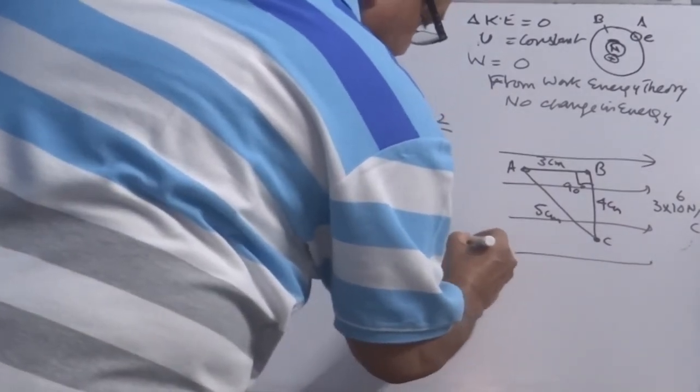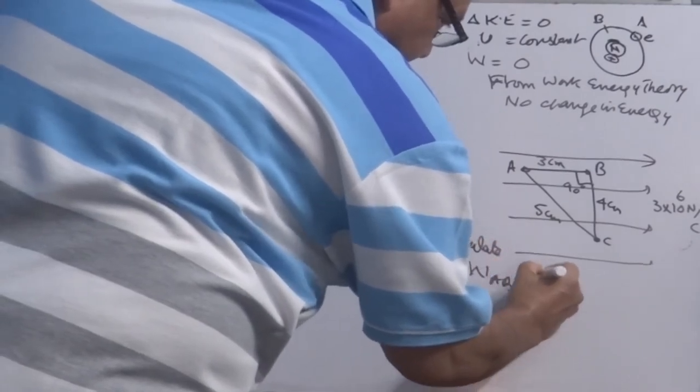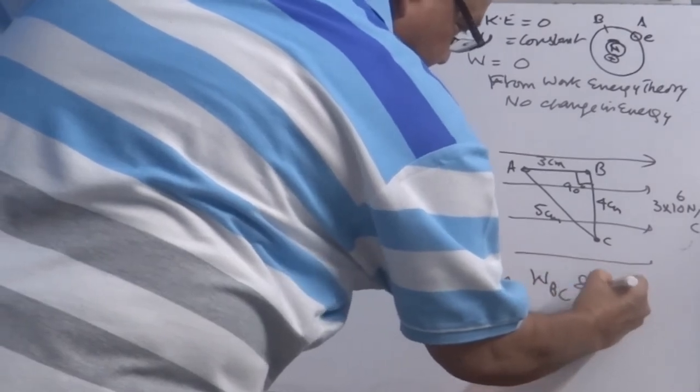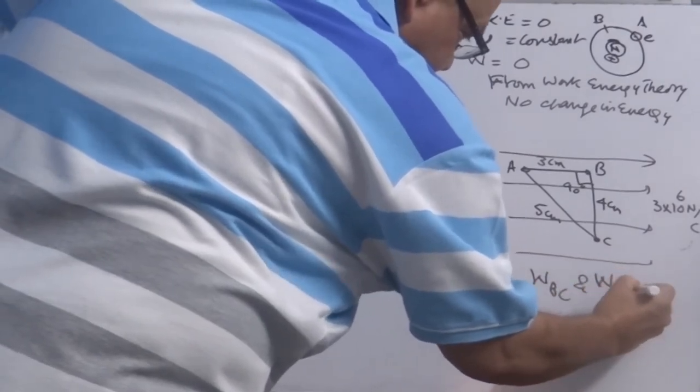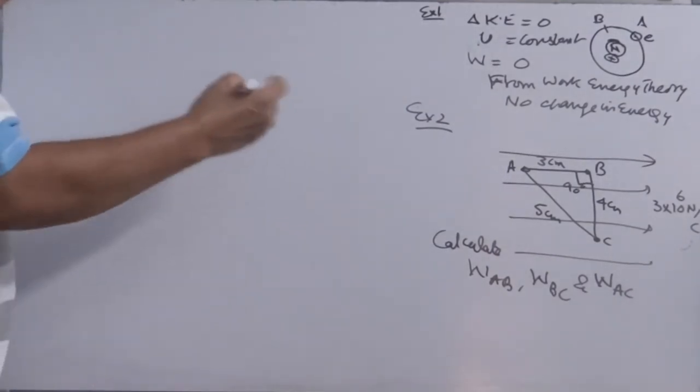What you have to calculate? Calculate work done between A, B, B, C and A, C. How do you calculate work done?